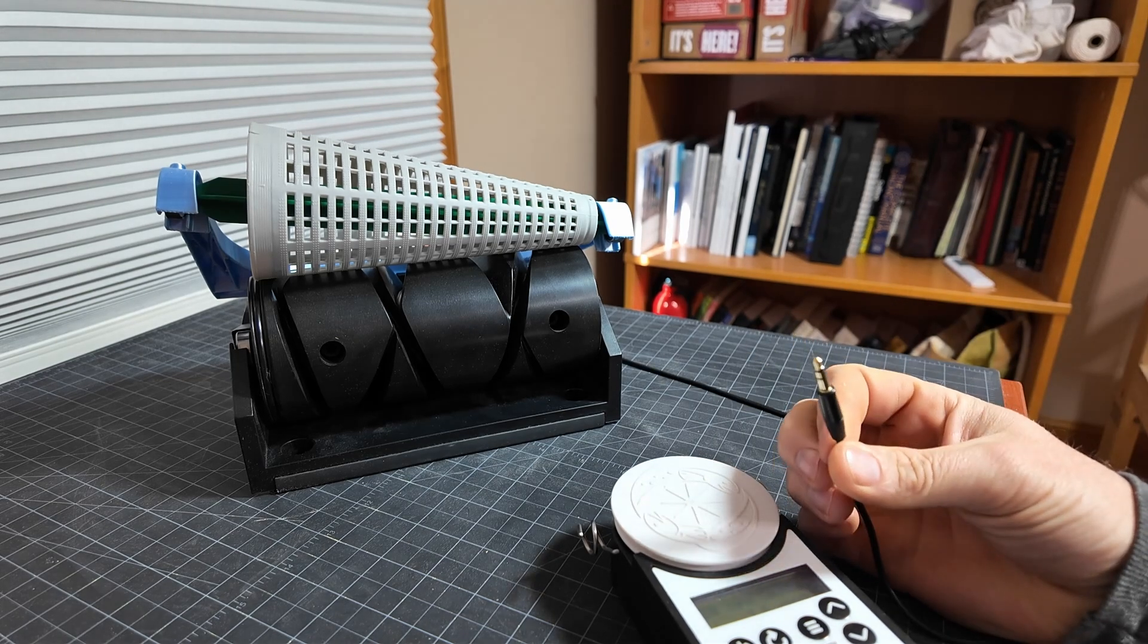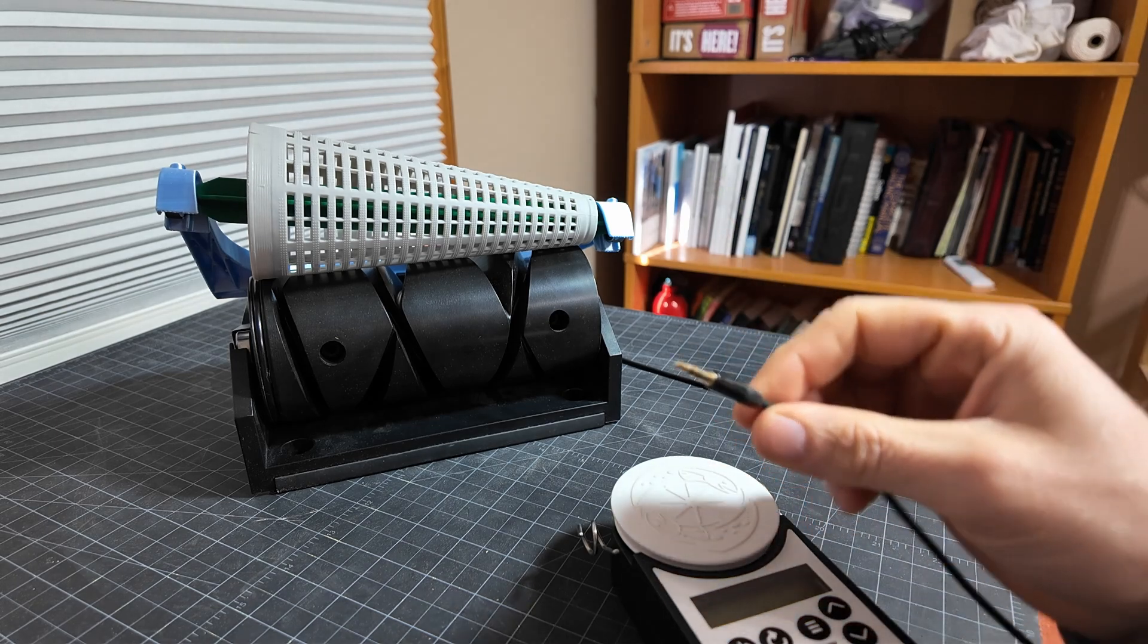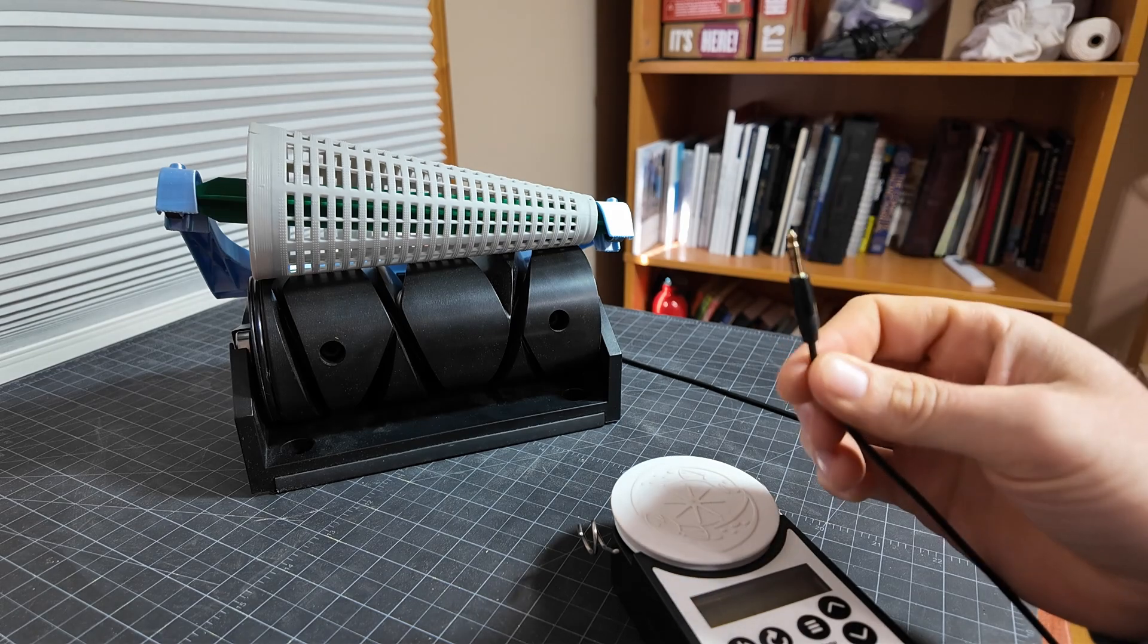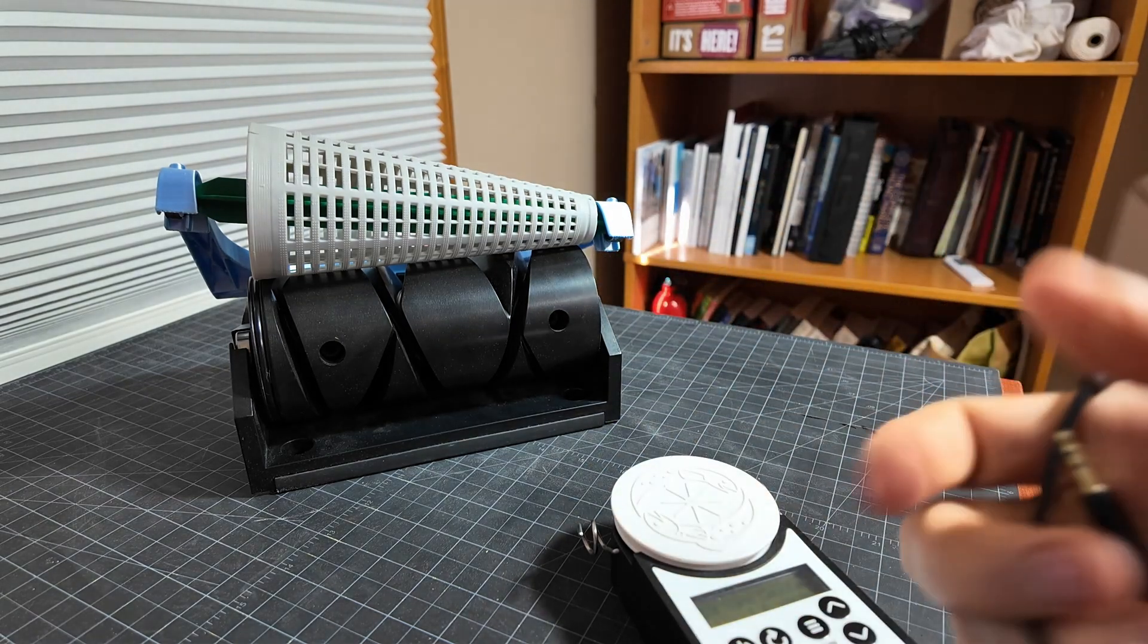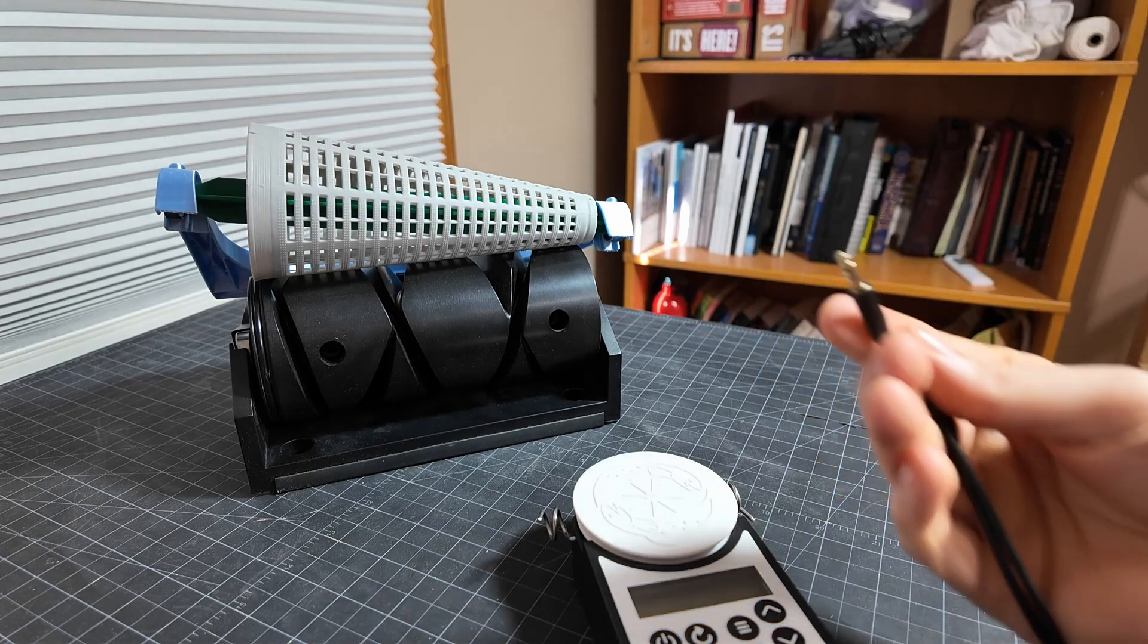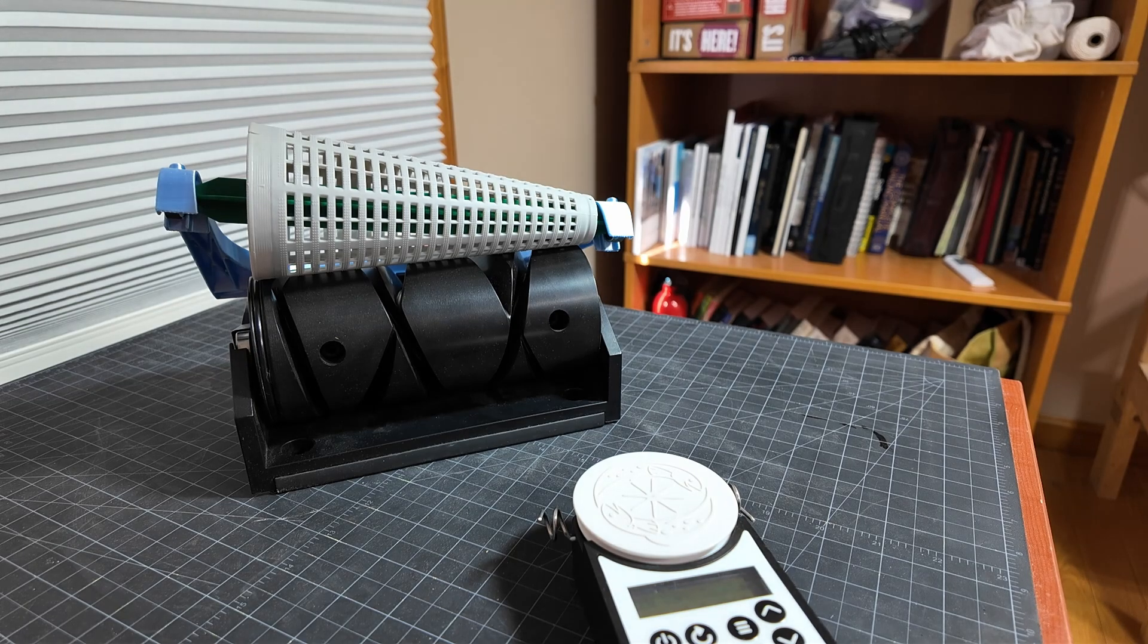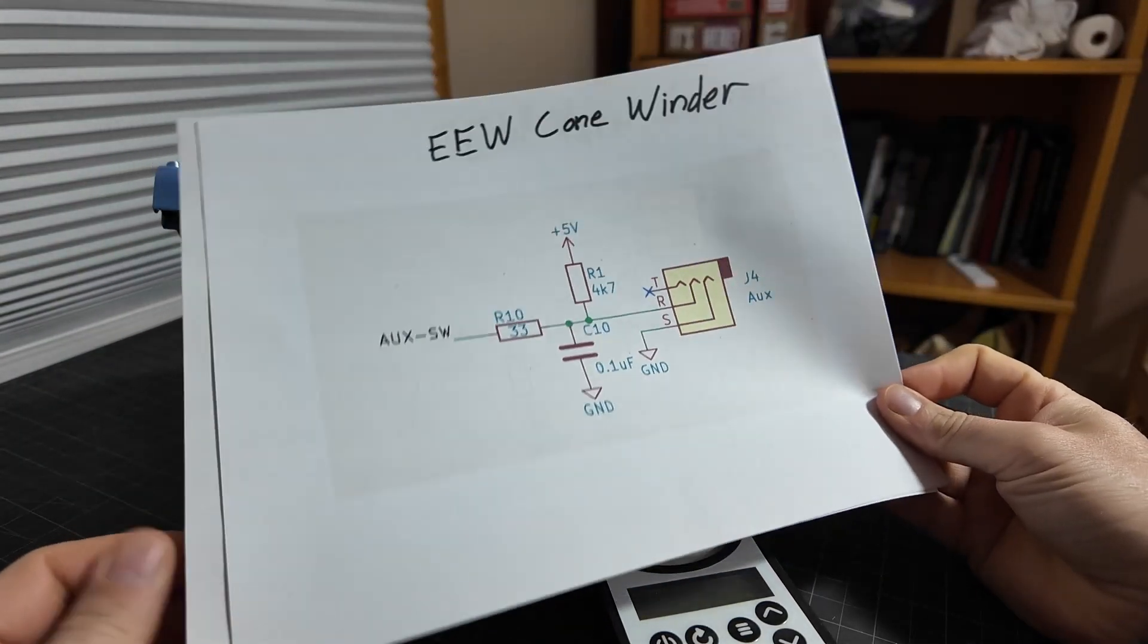So the first thing you'll want is a 3.5 millimeter stereo jack, and you can get these on Amazon or really most stores should carry something like this. It's a very common type of plug. It's probably male on both ends, but you need male for the yarn counter, and then you can put whatever else on the other end works for the device that you're making.